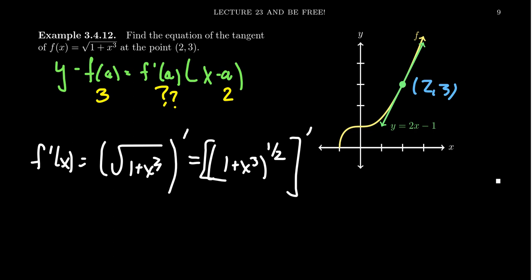This is where the chain rule is going to come into play because we have two functions. We have this inner function, 1 plus x cubed, which is inside the square root. It's within the scope of this exponent, 1/2. And then the 1/2 as a power function serves as the outer function. So to compute the derivative by the chain rule, we have two parts. We have the outer derivative, for which, by the power rule, we're going to get 1/2 times (1 plus x cubed) to the negative 1/2 power.